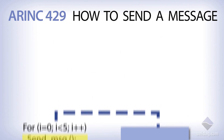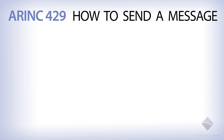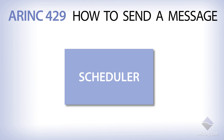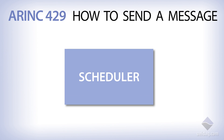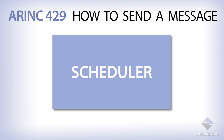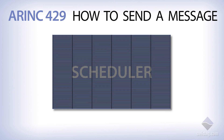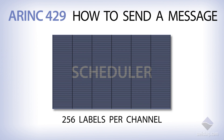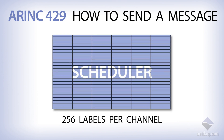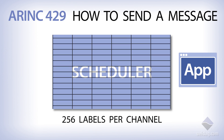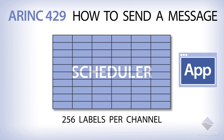In computing, scheduling is used to coordinate work by using resources other than your application program. The UEI-429 scheduler includes a table that allows up to 256 labels per channel. This scheduler can be started by your application or automatically based on the receipt of a specific label.